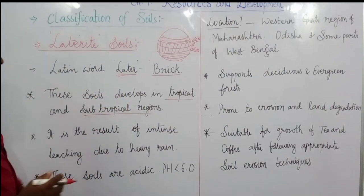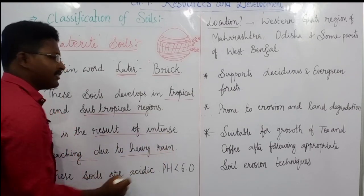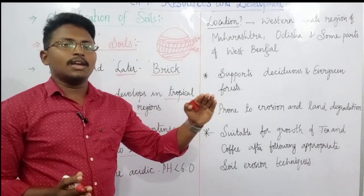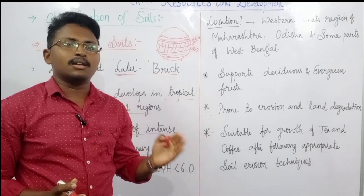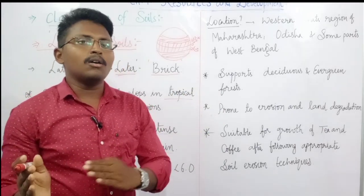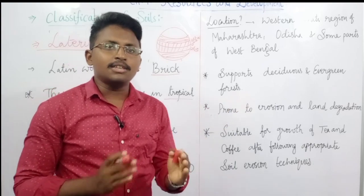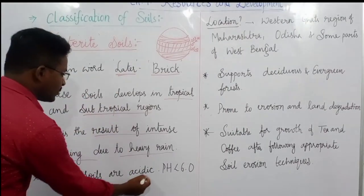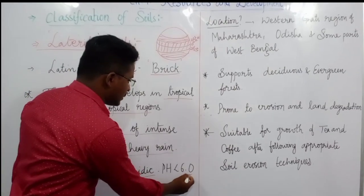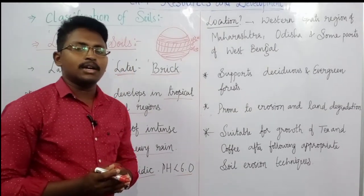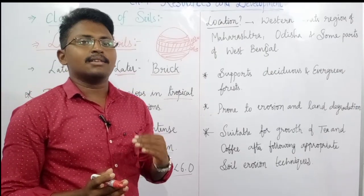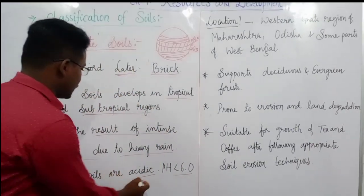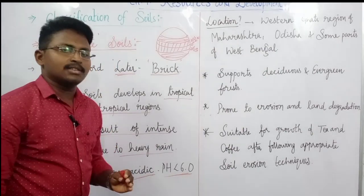Laterite soils are formed as a result of intense leaching due to heavy rain. Whenever there is heavy rain, the top layer of the soil is washed away. These soils are acidic in nature because the pH value is less than 6. As you know, a pH less than 7 is acidic, and more than 7 is basic.